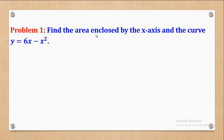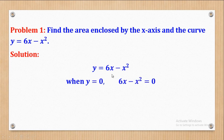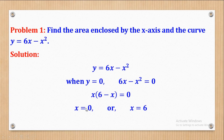Problem 1 says: find the area enclosed by the x-axis and the curve y = 6x minus x². In this case, we are given the curve y = 6x - x², so 6x - x² becomes our f(x). The first thing to do is to get the intercepts. So when y is 0, the whole expression becomes 0. When I factorize, I will get x = 0 or x = 6. So I have got the intercepts, and now I can go ahead to get the area.